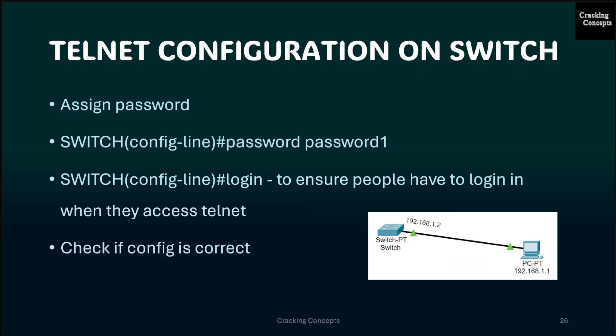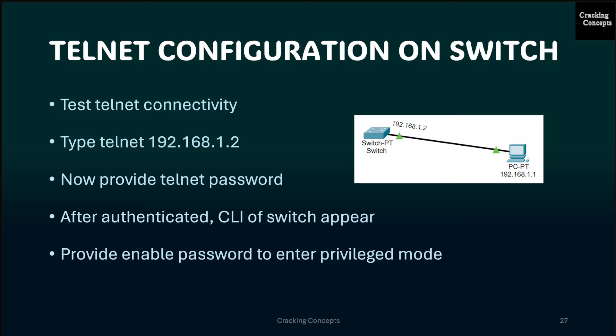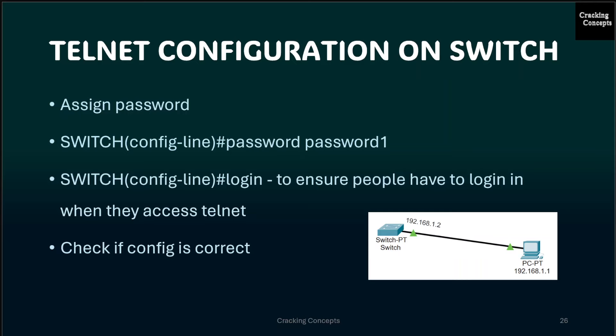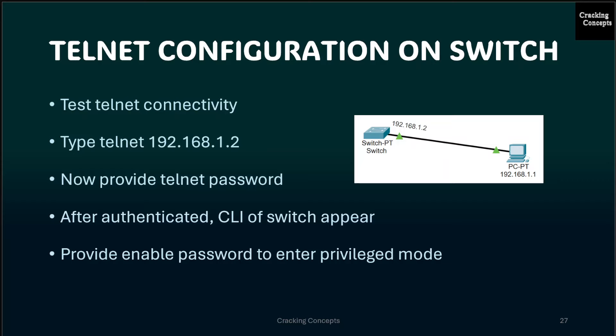Then we type exit to leave the VTY configuration. Finally, to verify the configuration, we check Telnet connectivity by typing telnet followed by the IP address of the VLAN interface of the switch, and entering the Telnet password. After entering that, you access the CLI of the switch in user mode, shown by the angle bracket. To make global configuration changes, type EN. If you can access the global configuration mode remotely from the PC, the connection is successful and the Telnet setup is done correctly.